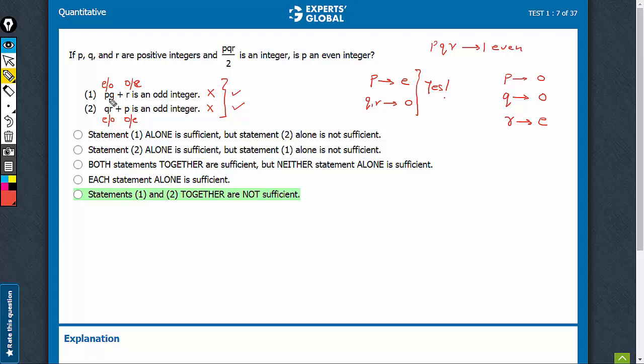In this case, see, PQ would be odd plus R, R is even. So odd plus even would be odd. So this statement is working fine for this set of values.